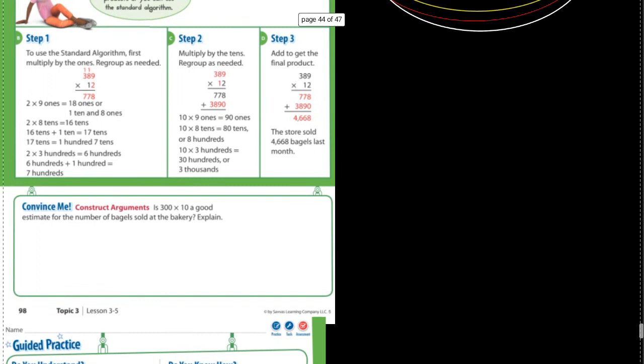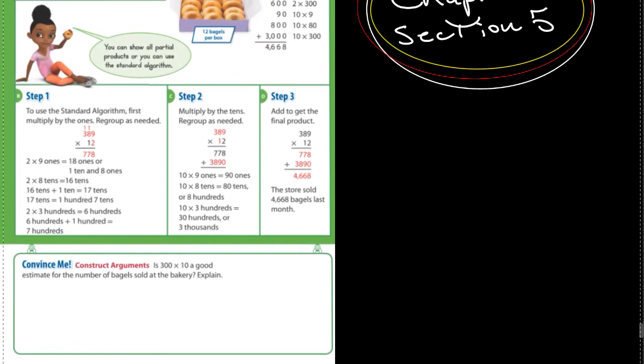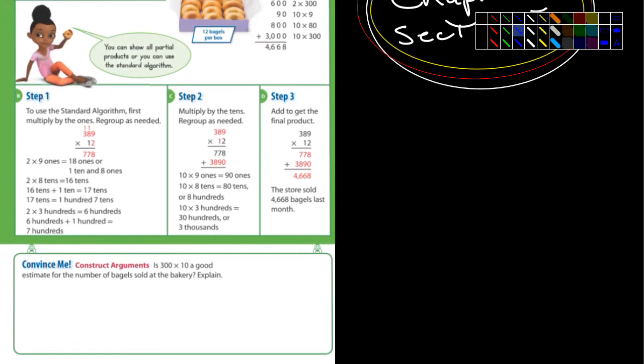So let's see here. I will look at the convince me though. Let's take a quick peek at that and I'll pull a stick. It says, is 300 times 10 a good estimate for the number of bagels sold at the bakery? Let's take a quick look.